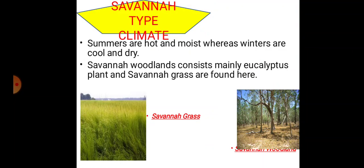In the savannah-type climate region, summers are hot and moist, whereas winters are cool and dry. The vegetation that grows here is savannah woodland, which also consists of eucalyptus plants. At the same time, savannah grass also grows in this woodland.